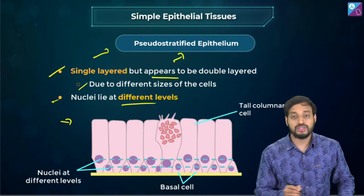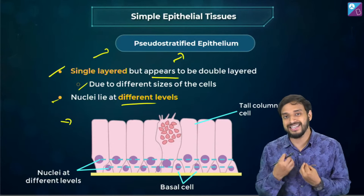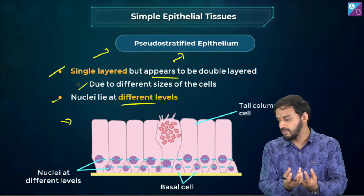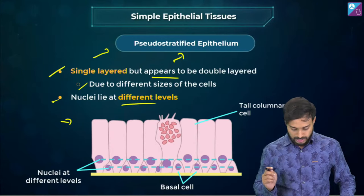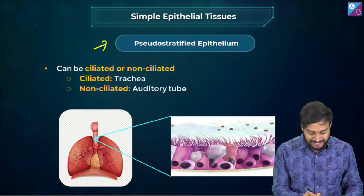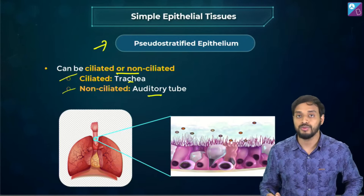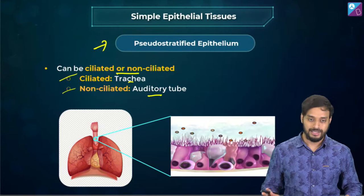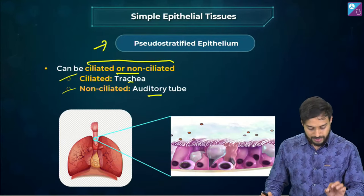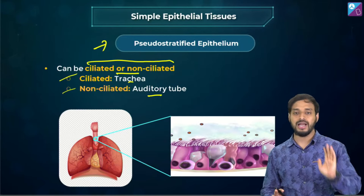Pseudo-stratified epithelium in the trachea helps to move the mucus, and if foreign particles enter they can be removed by coughing. It can be ciliated — found in trachea — or non-ciliated — found in the auditory tube. Please note the locations as questions with examples can be asked.